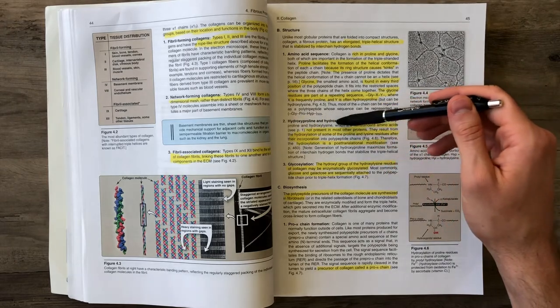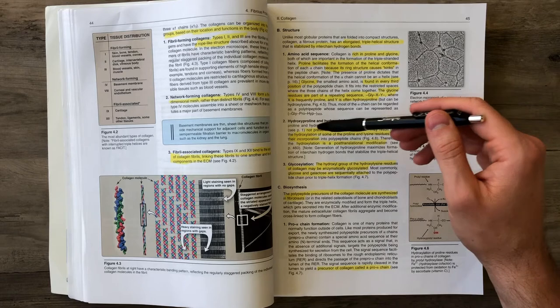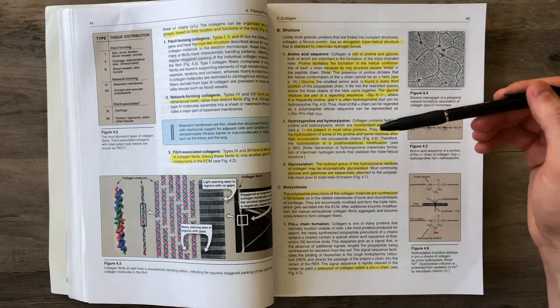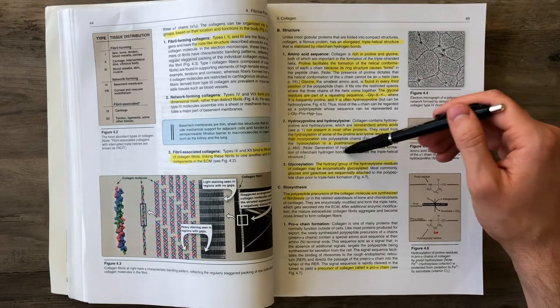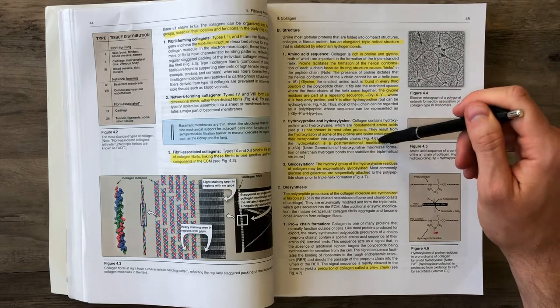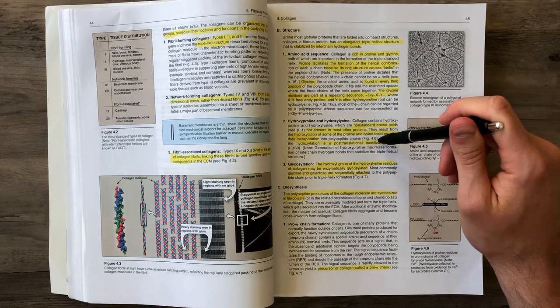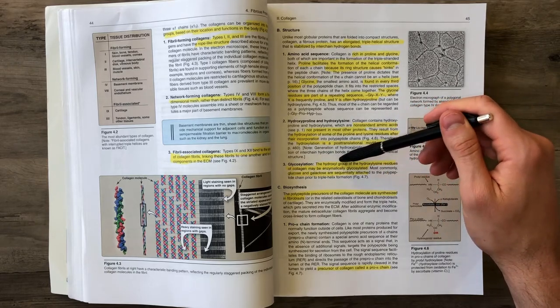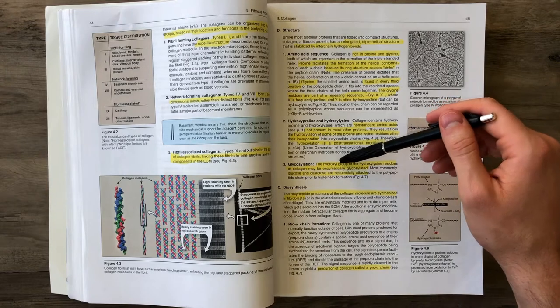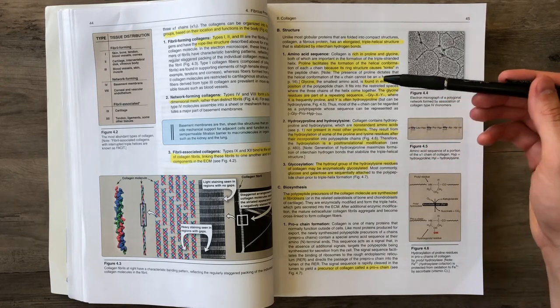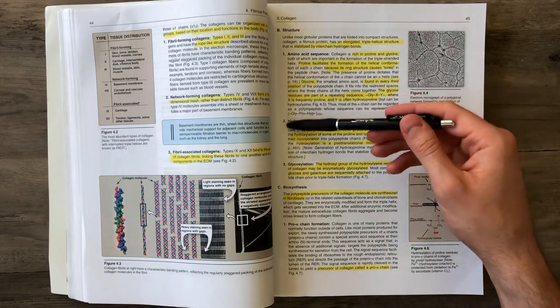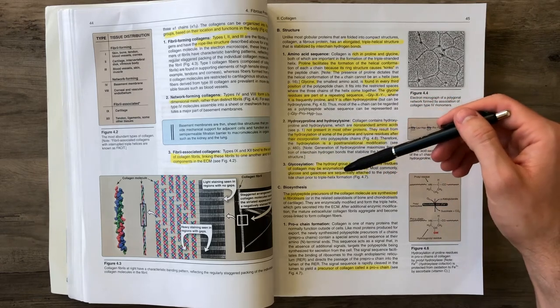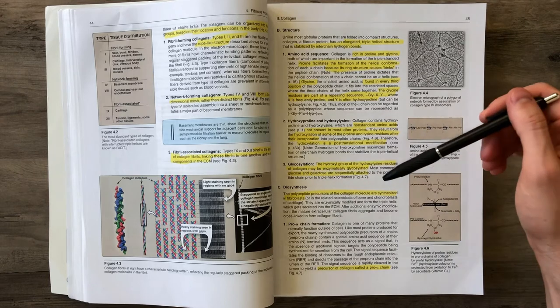Hydroxyproline or hydroxylysine means these amino acids have been hydroxylated after they've been incorporated into the polypeptide chain. It's a post-translational modification. We can also glycosylate these hydroxyl groups by adding glucose or galactose.